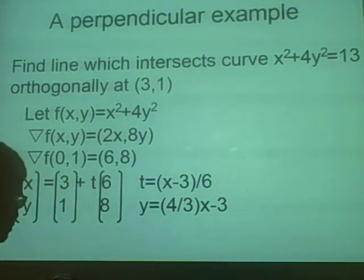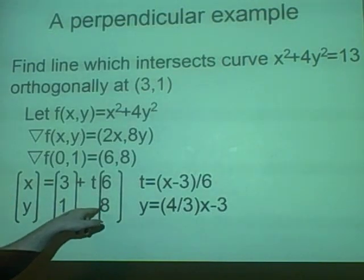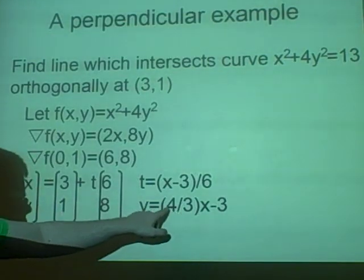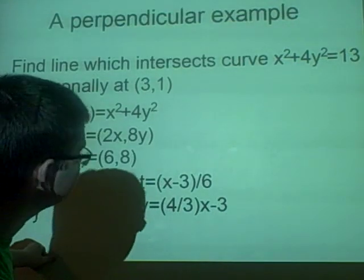And it's generally nice to leave it in y equals form. So we substitute this t into this t over here, which was 8t. And it'll give you the answer, y=(4/3)x-3. Is that it? Yep.